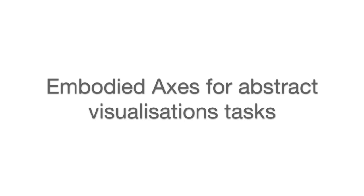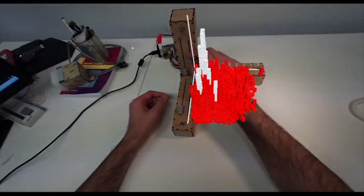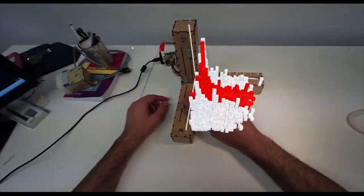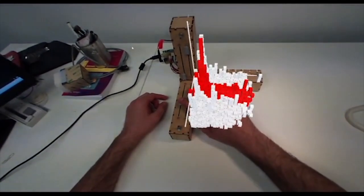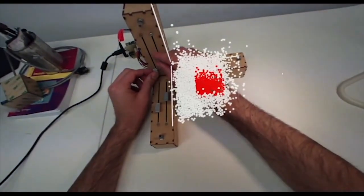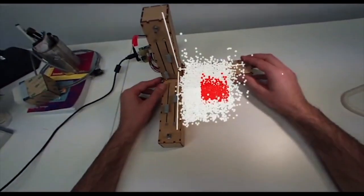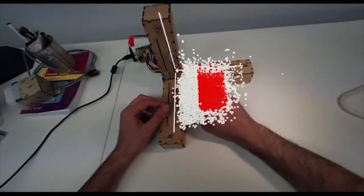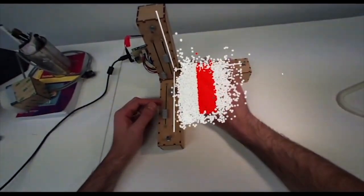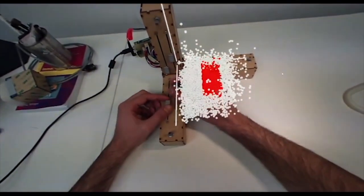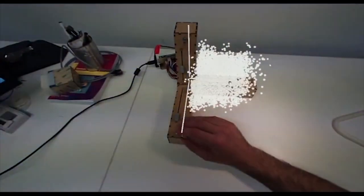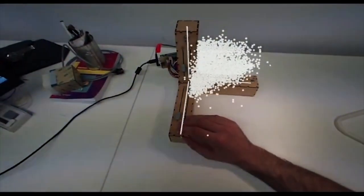The Embodied Axes can also be used in the context of abstract data visualisation. Range selection, value filtering, and volume selection are all supported in this context. The rotary dial on each axis can be used to map data dimensions to that specific axis.